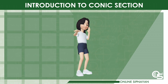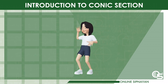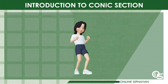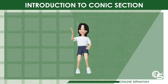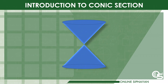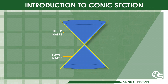Conic Section is defined as the curves formed from the intersection between a plane and a double right circular cone. Suppose we have a double right circular cone — consider the following parts: first, the upper nap, which is the ice cream cone-like shape; then the lower part, which is like a party hat, is called the lower nap. Then the generators, the axis, and the vertex.